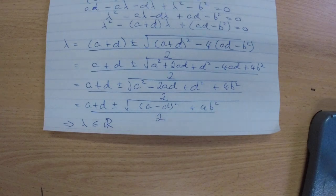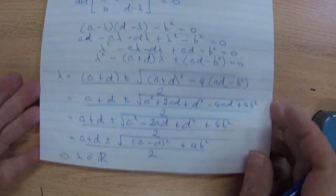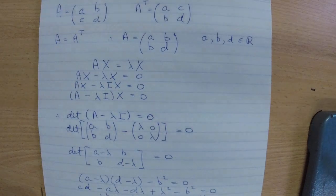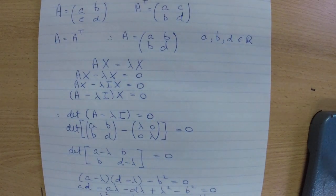There we have it. We've managed to prove that the eigenvalue of a symmetric 2x2 matrix will always be a real number. There we go.